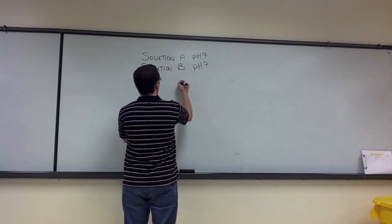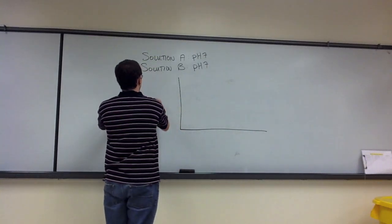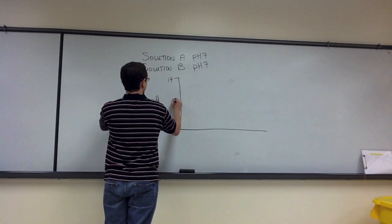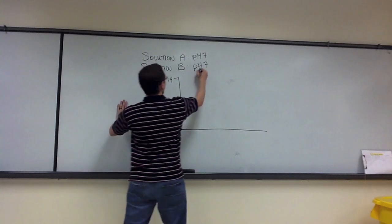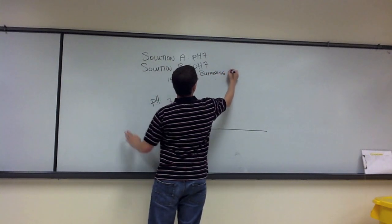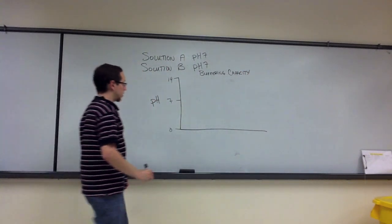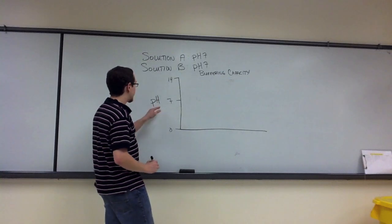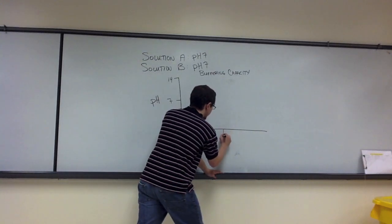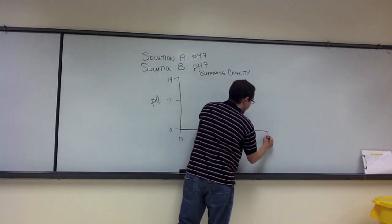So what you then found was the following. So I'm going to draw out my graph and we're going to title this buffering capacity. This is relative buffering capacity of these solutions. Okay, so on my y-axis I have my pH going from 0, 7, and 14. On my x-axis I'm actually going to split it and have 0 here in the middle and 10 at either end.